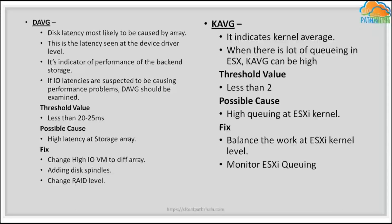Student Pranay explains KAVG: it's the kernel average. For example, during a Storage vMotion — migrating a virtual machine from one datastore to another — the traffic goes through the ESXi hypervisor kernel. If there is high latency at the kernel level, that shows up as KAVG, the kernel average.